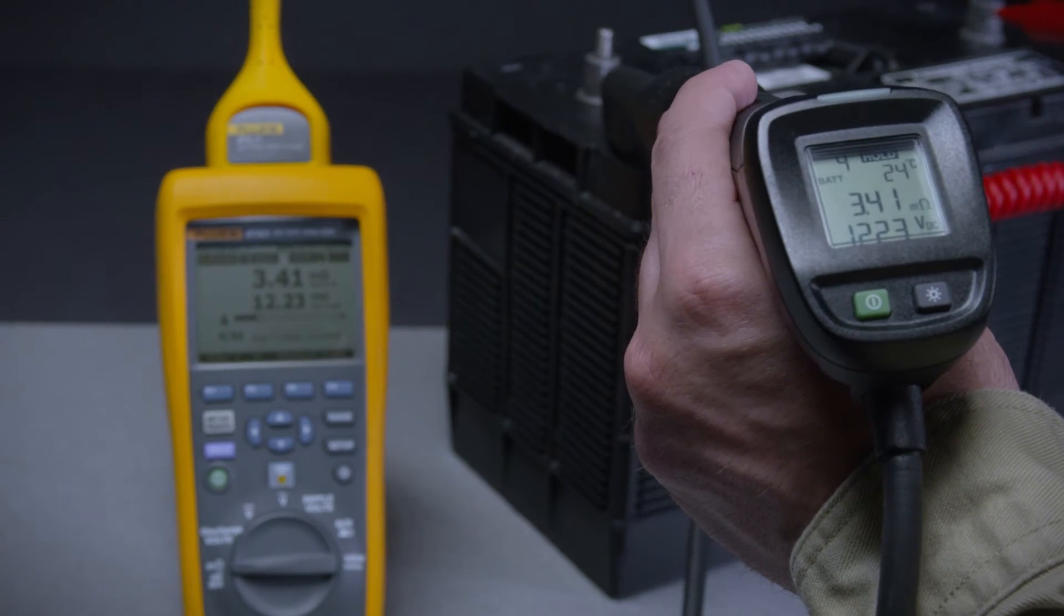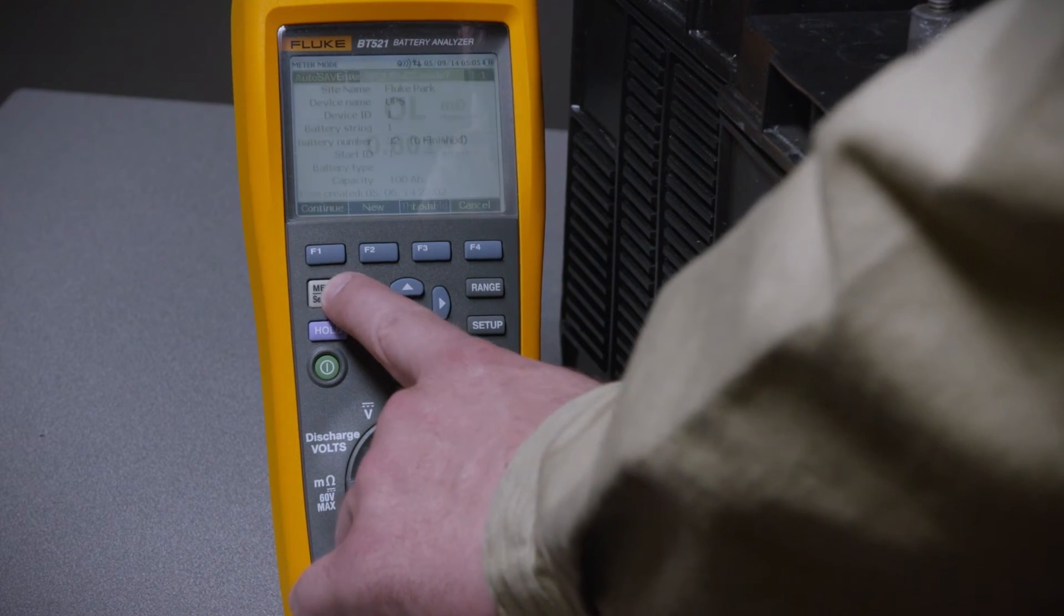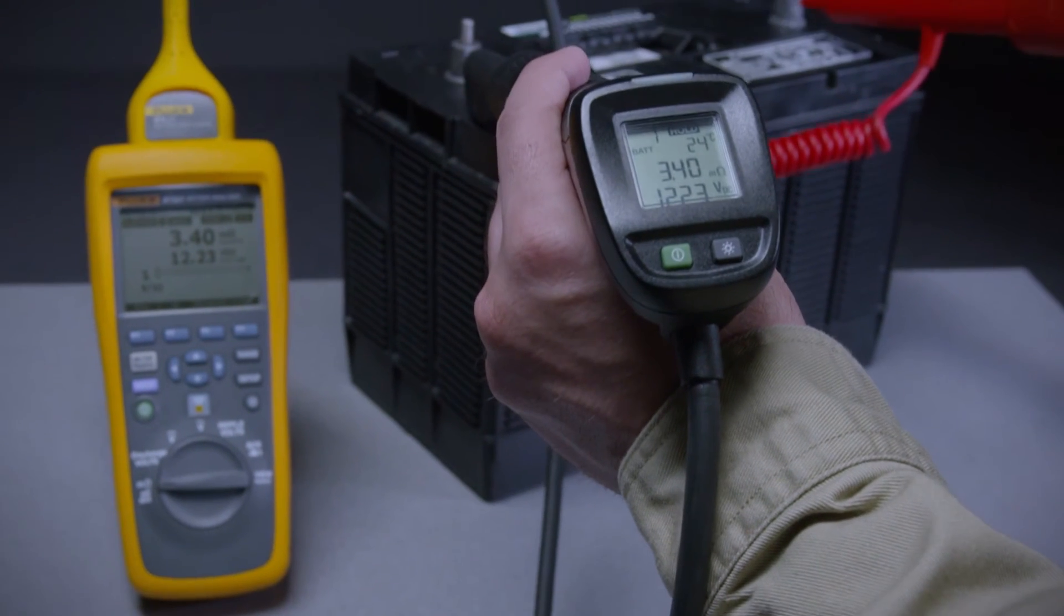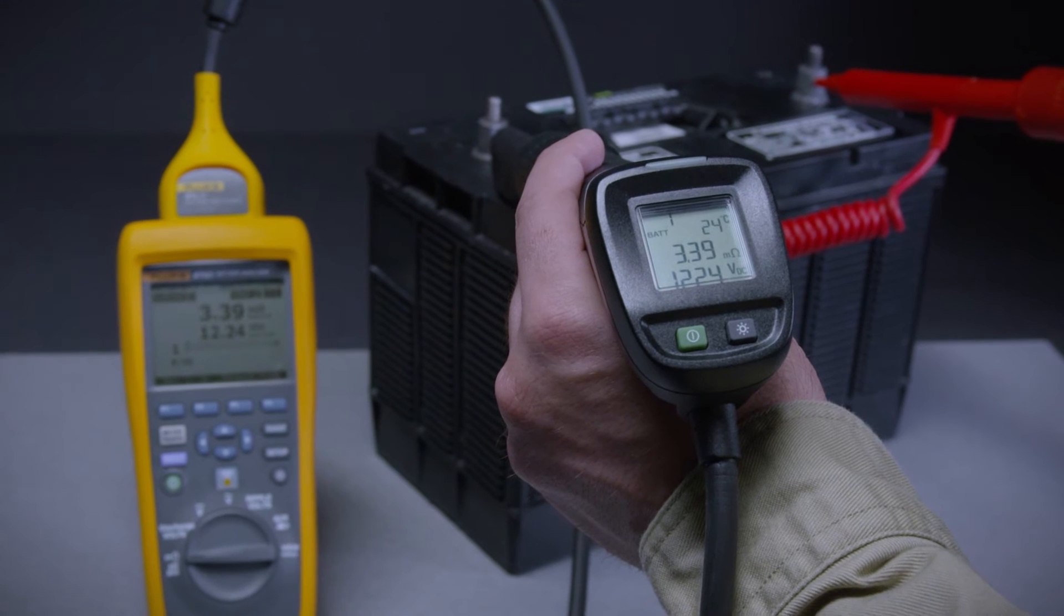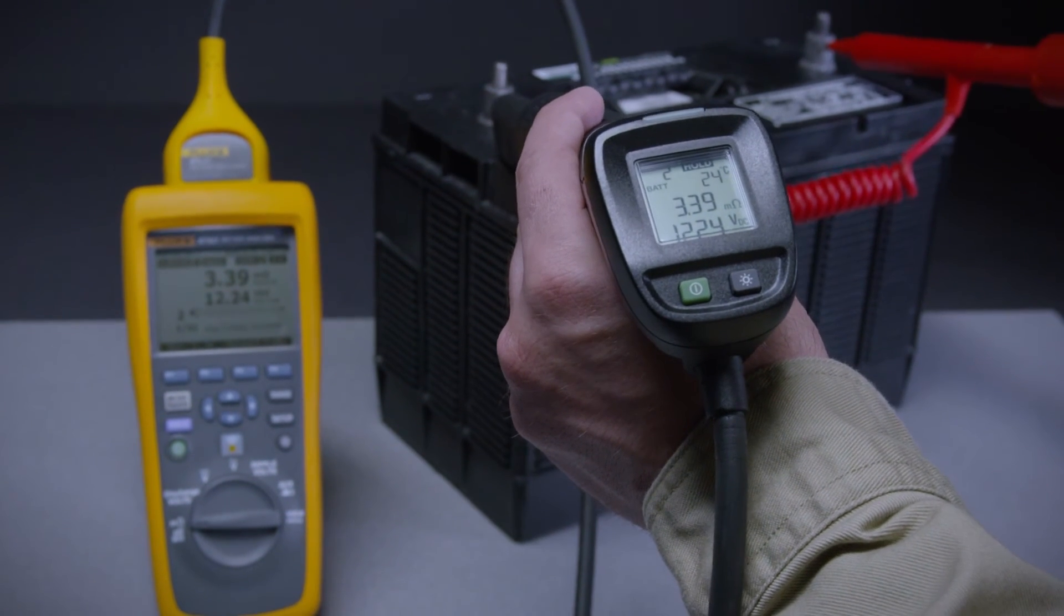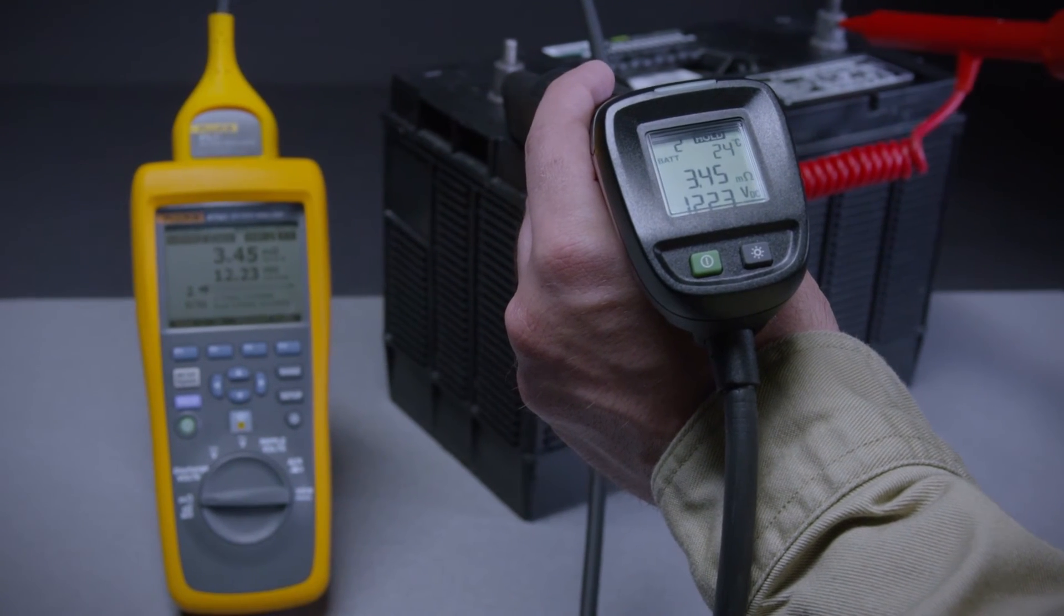We can also use the intelligent probe in the sequence mode. Simply enter into sequence mode on the instrument, then begin taking the required measurements, specifically voltage and battery resistance. The display on the probe handle indicates that the reading has been taken and saved, and the probe uses verbal cues to indicate which measurement in the sequence has been made.